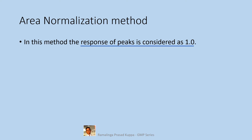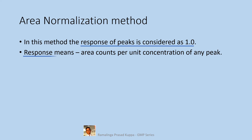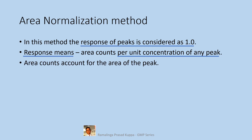That means if the area of a 0.1% solution gives an area count of 1000, and if the area counts are 1500, 2000, 1800, or 2400, etc. for other peaks, the percentage of each peak will be 0.15%, 0.20%, 0.18%, and 0.24%, etc.